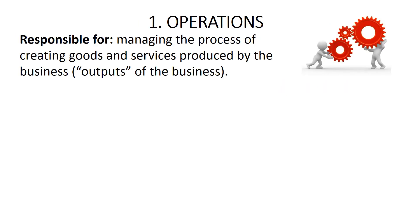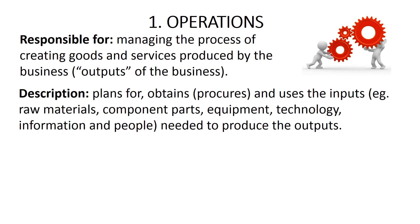The first area of management responsibility is operations. This area is responsible for managing the process of creating the goods and services — that is, the outputs — of the business. More specifically, the operations area plans for, obtains, and uses the inputs such as raw materials, component parts, equipment, technology, information, and people that are needed to produce the outputs of the business.